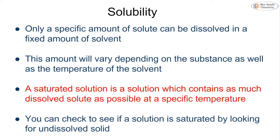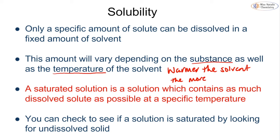Only a specific amount of solute can be dissolved in a fixed amount of solvent — it is not infinite. The amount depends on the substance itself, but also on the temperature of the solvent. Generally, the warmer the solvent, the more solute can dissolve. An important term is a saturated solution: a solution which contains as much dissolved solute as possible at a specific temperature, meaning there will be some undissolved solid left. You add solute, stir and dissolve, until no more can be dissolved — that is our saturated solution.